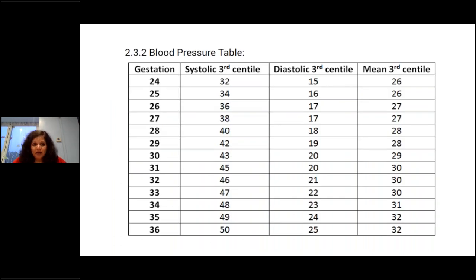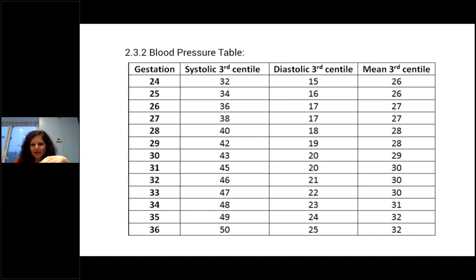We use a table looking at the third centile — that's the lowest centile we monitor. If the baby is coming below the third centile, you need to ask whether blood pressure is adequate and whether there is end-organ perfusion to worry about. I use it to make sure I'm not over-treating or under-treating with antihypertensives.